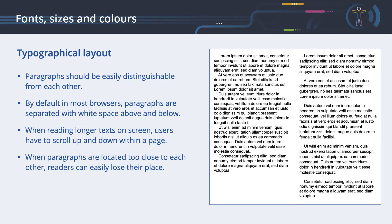Paragraphs should be easily distinguishable from each other. By default in most browsers, paragraphs are separated with white space above and below. When reading longer text on screen, users have to scroll up and down within a page. When paragraphs are located too close to each other, readers can easily lose their place. Having white space between paragraphs helps to distinguish between them better than if paragraphs are separated only by an indented first line.